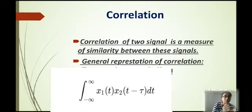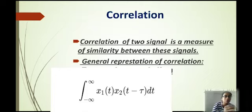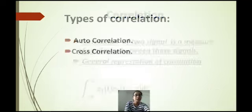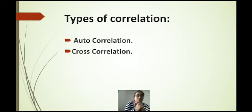The correlation equation is the integral from minus infinity to infinity of x1(t) · x2(t minus tau) dt. It looks like convolution, so don't confuse them. When we convolute two signals x1 and x2, it equals the integral of x1(tau) · x2(t minus tau) d-tau. Convolution is in the tau domain and correlation is in the t domain. After that we discuss the types of correlation.